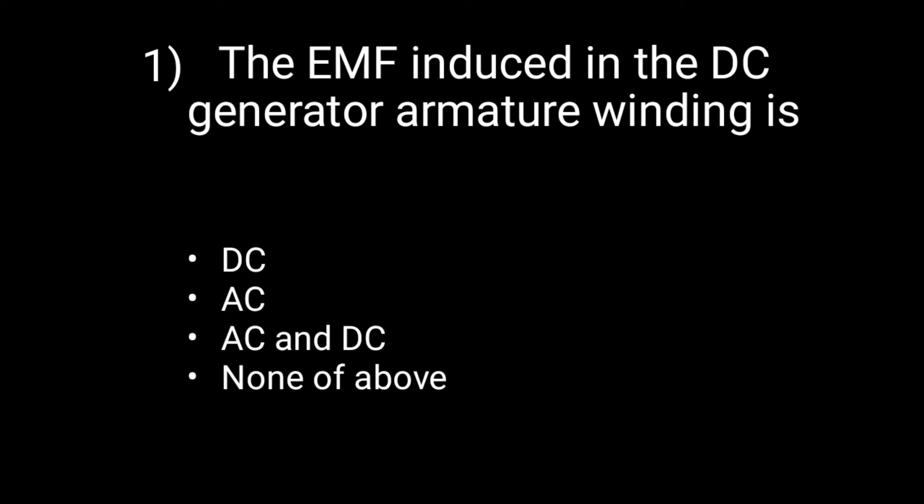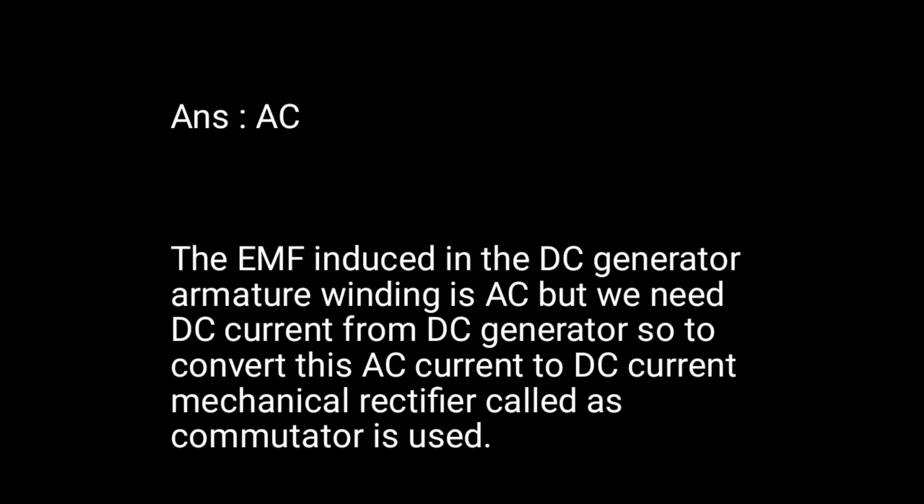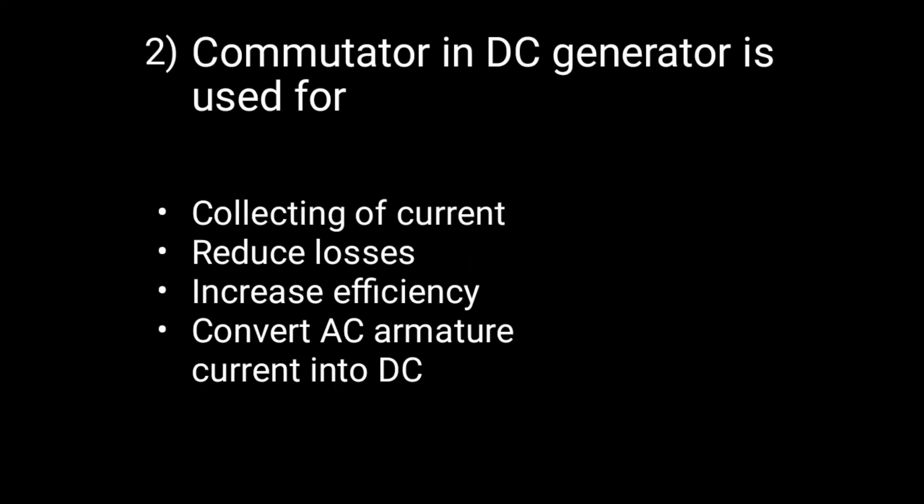The EMF induced in the DC generator armature winding is AC in nature. To convert this AC current to DC current, a mechanical rectifier called a commutator is used. The second question is: in a DC generator, the commutator is used for...